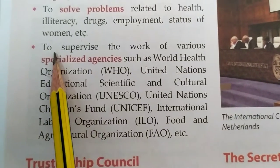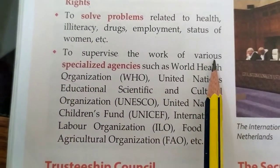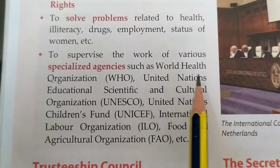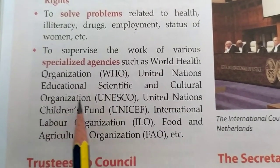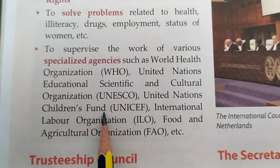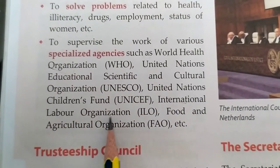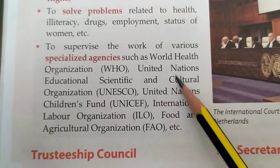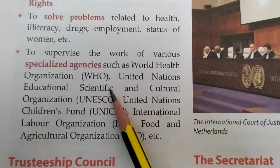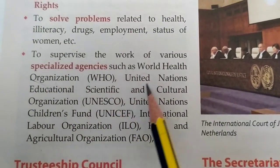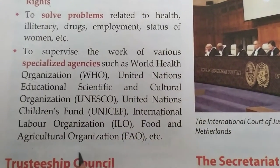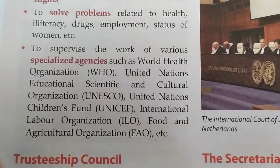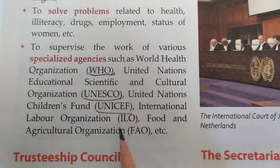The last objective is to supervise the work of various specialized agencies such as the World Health Organization, United Nations Educational, Scientific and Cultural Organization, United Nations Children's Fund, International Labour Organization, Food and Agricultural Organization, etc. Remember the full forms of these important organizations: WHO, UNESCO, UNICEF, ILO, and FAO.